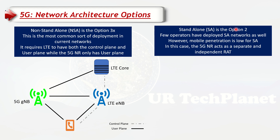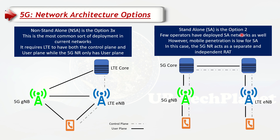The other option is standalone, also called Option 2. In this case, 5G can work on its own and needs its own core. An LTE UE connects to LTE, while a 5G UE can directly connect to 5G and have a session with the 5G core. Both control plane and user plane traffic go through 5G — unlike NSA where only the user plane went through 5G while the control plane stayed on LTE.